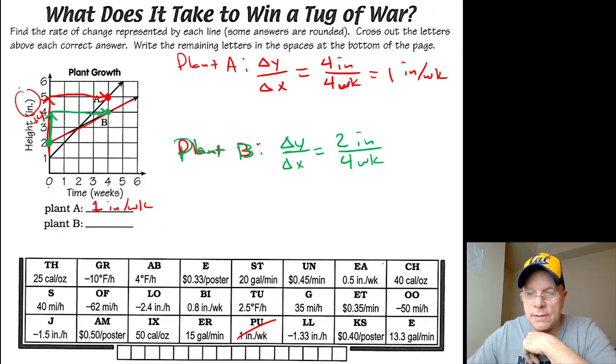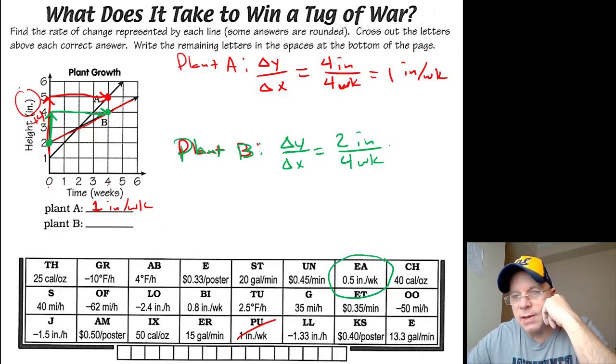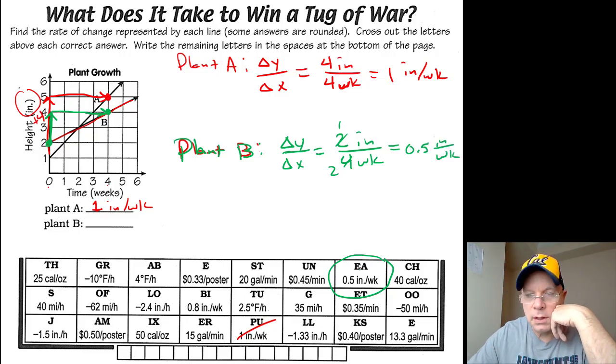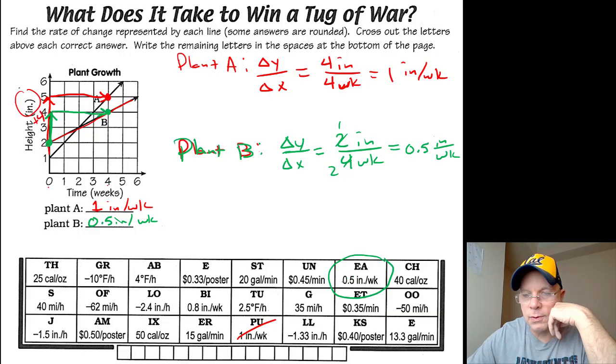So two divided by four is one half. But when I look at these, I see they're representing these rates as decimals. Let me just say that two fourths is one half, and one half is 0.5. So 0.5 inches per week. We'll cross that one off.